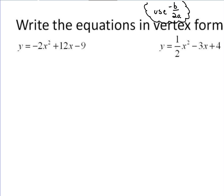Okay, so if we're going to put this first one in vertex form, and we're using the negative b over 2a approach, we've got our general form here for our quadratic function. We identify a to be negative 2, b to be 12, and c to be negative 9.